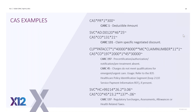Here are some examples — follow along with each row. First, a CAS segment with group code PR, CARC 1, and dollar amount $300. We know CARC 1 is the deductible amount. The second example: for service D0120, the charge amount was $46 and the payment amount was $25. The CAS segment is a contractual obligation with reason code 131 for $21 — CARC 131 is the claim-specific negotiated discount. The balancing: $46 minus $21 leaves a payment of $25.